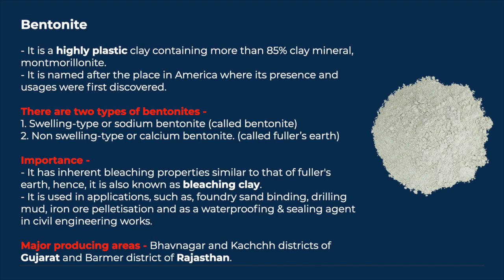Bentonite is a highly plastic clay containing more than 85% clay mineral, Montmorillonite. It is named after the place in America where its presence and usages were first discovered. There are two types of bentonites: sodium bentonite, usually referred to as bentonite, whereas calcium bentonite is called Fuller's Earth or more popularly as Multani Mitti. Bentonite has inherent bleaching properties similar to that of Fuller's Earth, hence it is also known as bleaching clay.